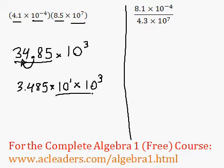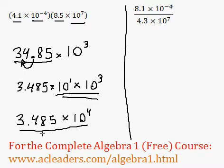So now we just need to combine the 10s. So we have 3.485 times 10, 1 plus 3, 4. And that's it.